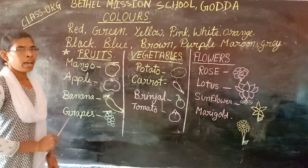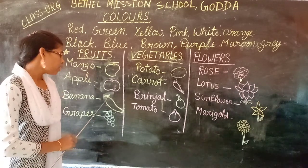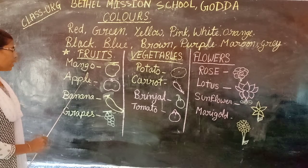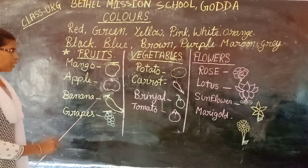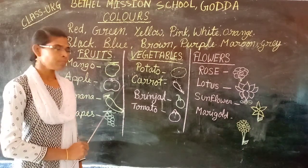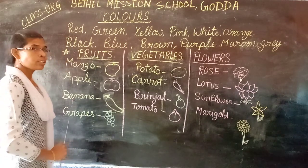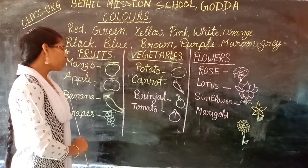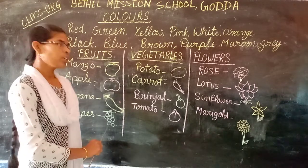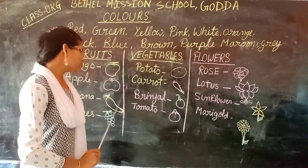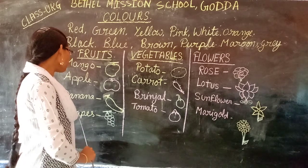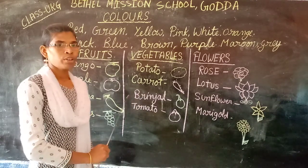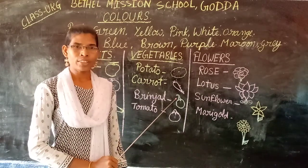Apple. A-P-P-L-E. Apple. Apple is red in color. Banana. B-A-N-A-N-A. Banana. It is yellow in color. Grapes. G-R-A-P-E-S. Grapes. They are green and purple in color.